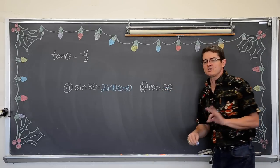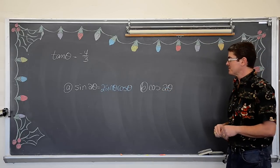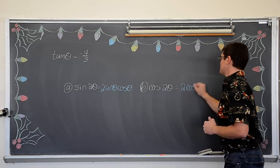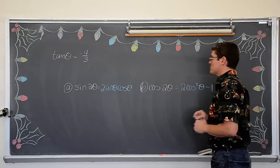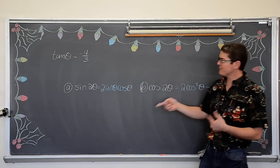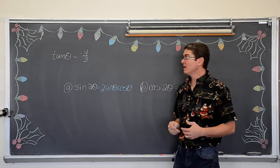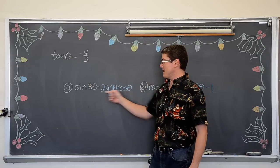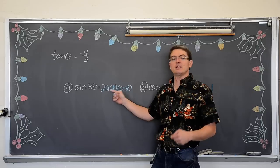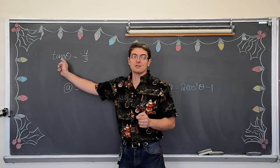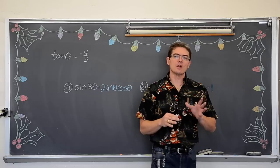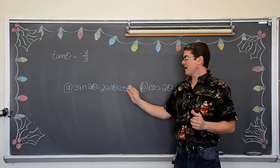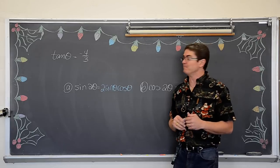For the cosine of two theta we have three choices; let's use two cosine squared theta minus one. So to find the sine of two theta, I reference the identity and it says I need the sine of theta and the cosine of theta. I am given the tangent of theta, so I am going to have to draw a reference triangle to set up sine and cosine.